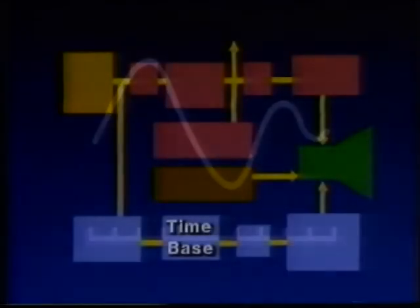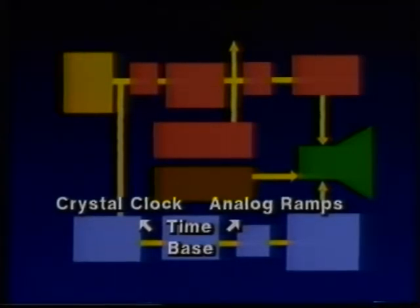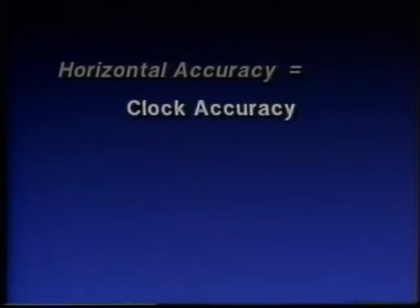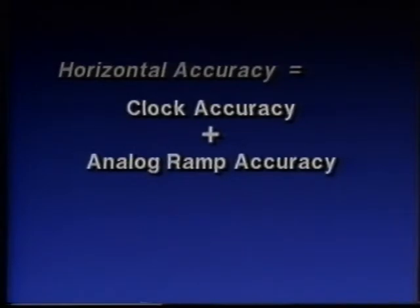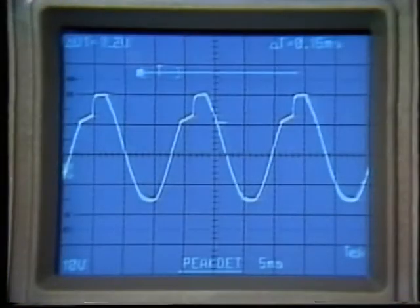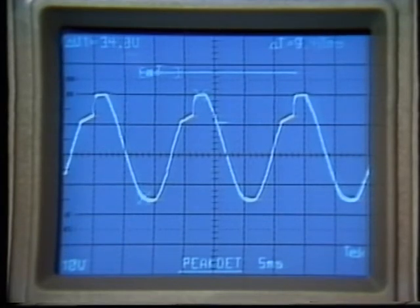Many digital oscilloscopes use both crystal-based clocks and analog ramp generators to produce timing signals for the horizontal time base. Typically, clock signals are used for the majority of time base settings, while analog ramps are used in conjunction with the crystal clock for the fastest time base settings. The horizontal accuracy of a DSO is determined by the accuracy of the crystal clock and analog ramp generator, and in some cases the CRT linearity. The accuracy of measurements is greatly improved with digital cursor measurements, as the microprocessor performs calculations on sample point data stored in memory.